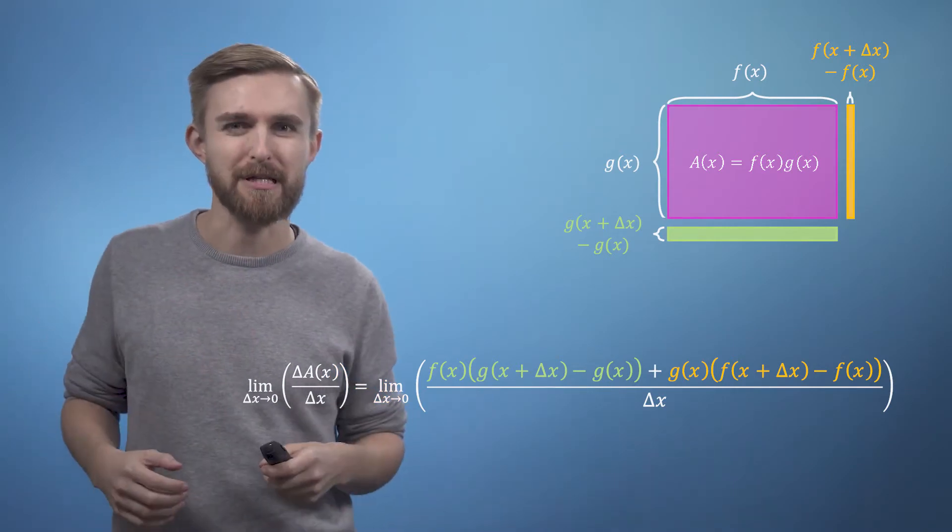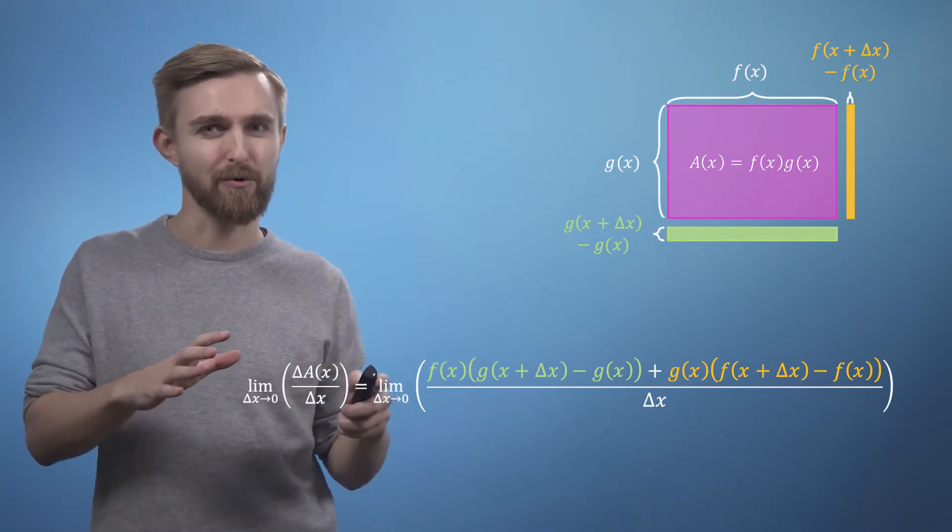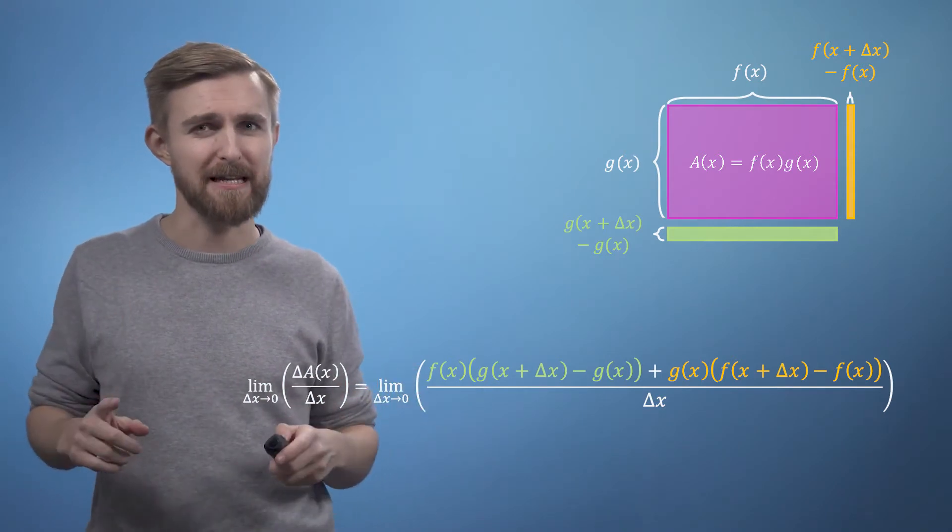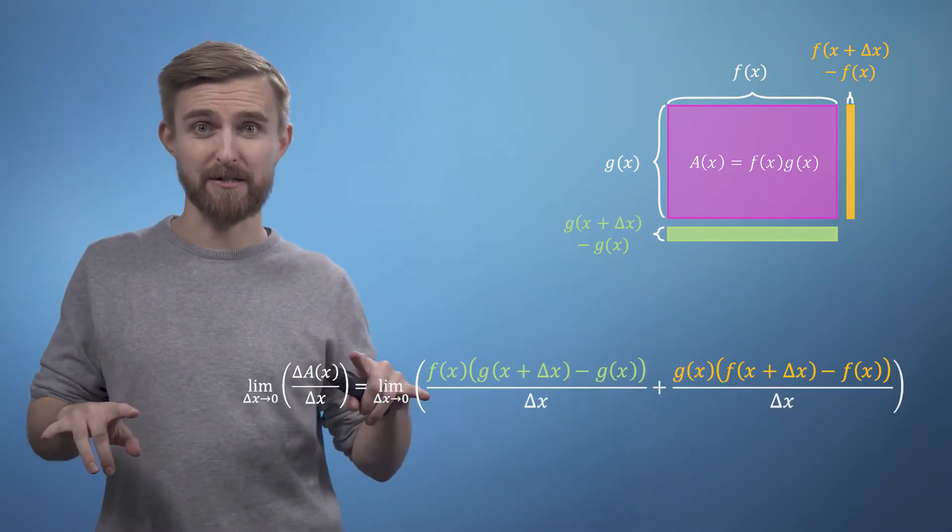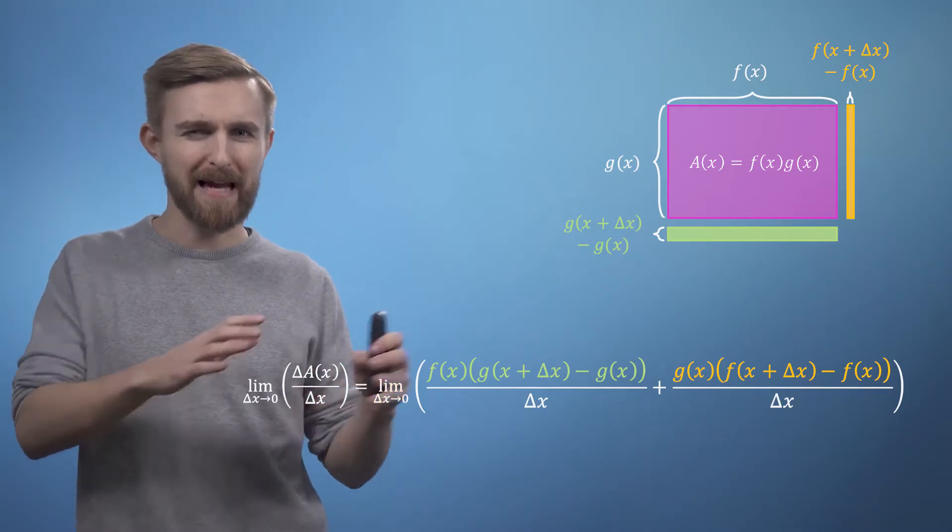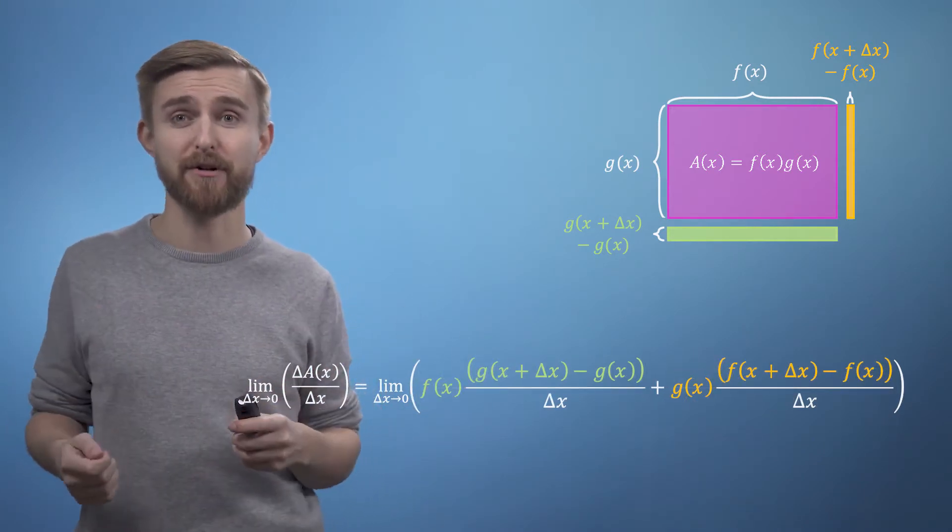We are so close at this point, all we need to do is slightly rearrange this equation. So firstly, by splitting it into two fractions, and then secondly, by moving f of x and g of x out of the numerators.